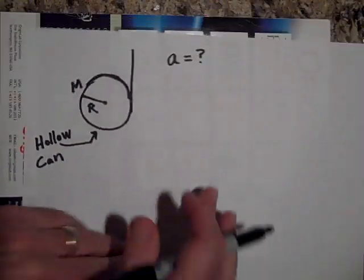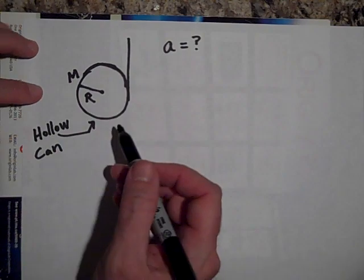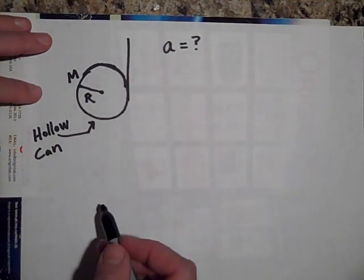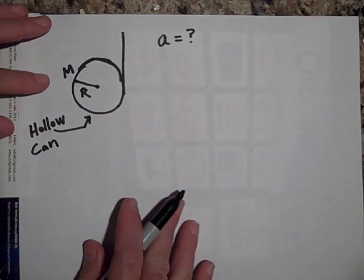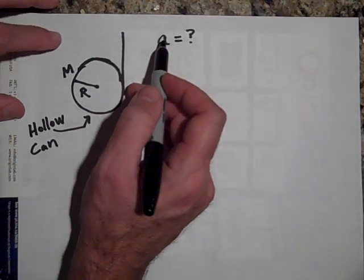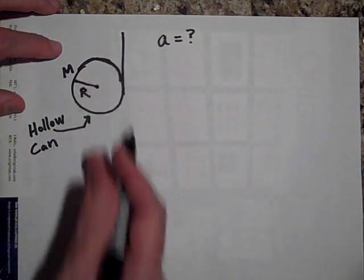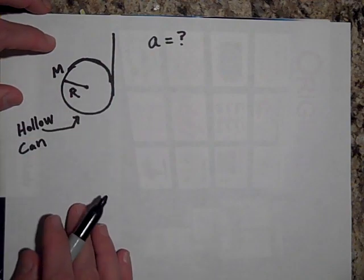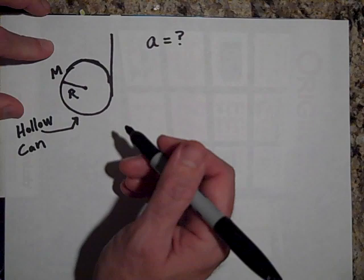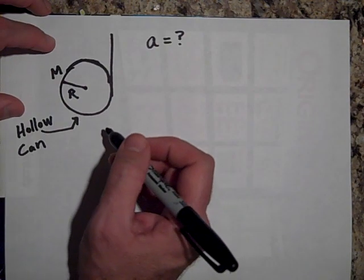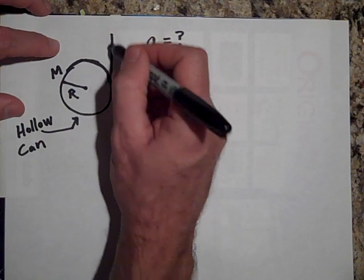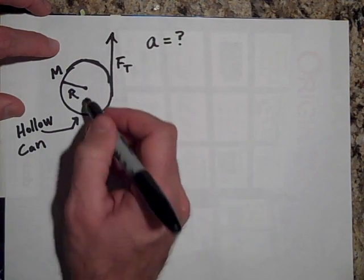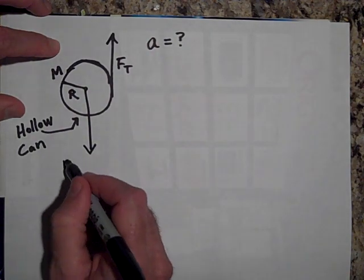All right, next one here is a hollow hoop or a hollow can. It's got a mass M. There's some string wrapped around it and we're going to just let it unravel and it's going to descend downward. Let's find out its acceleration as this rotates downward and descends, kind of like a yo-yo moving downward. Okay, so there's a couple ways you can do this.